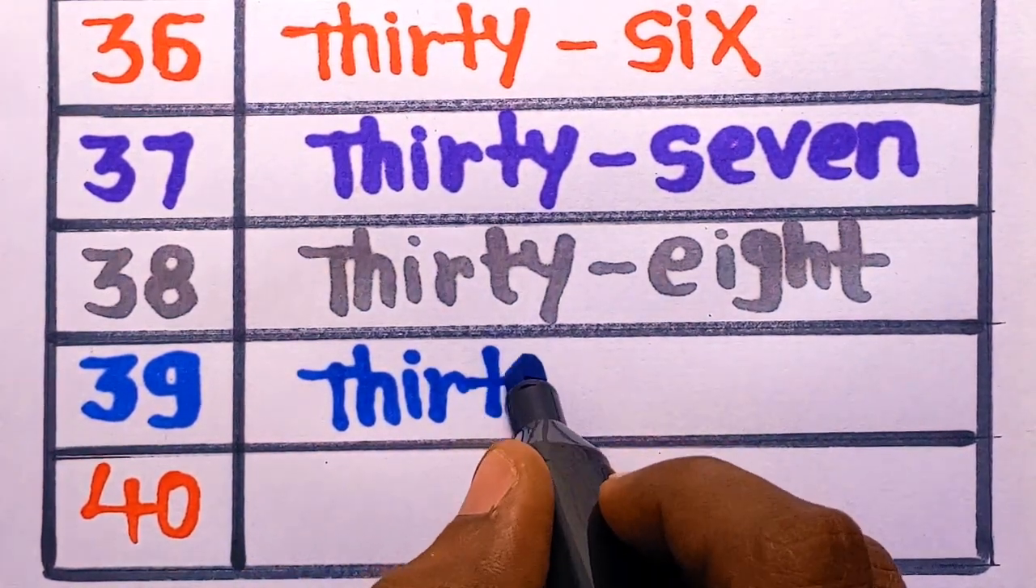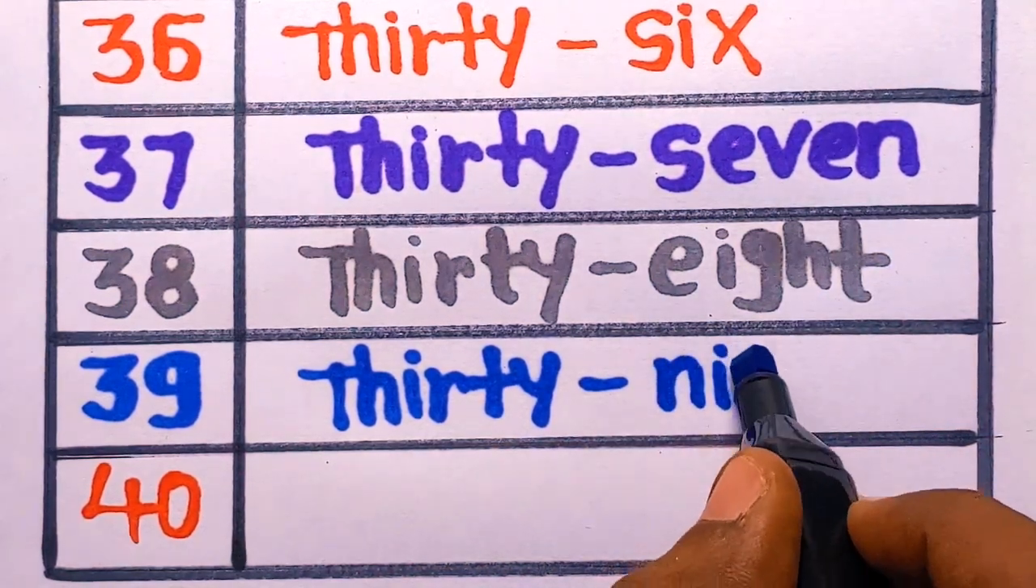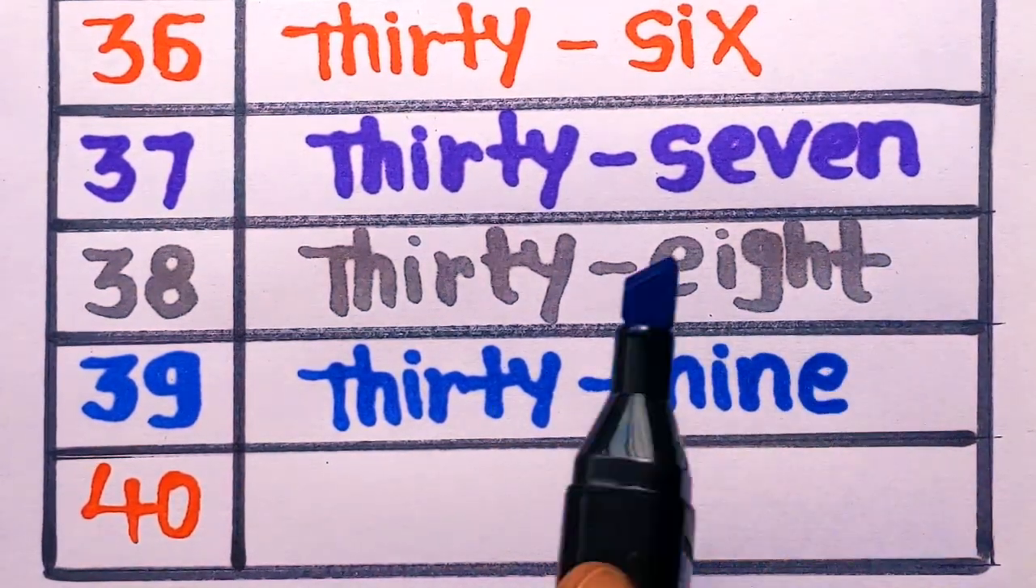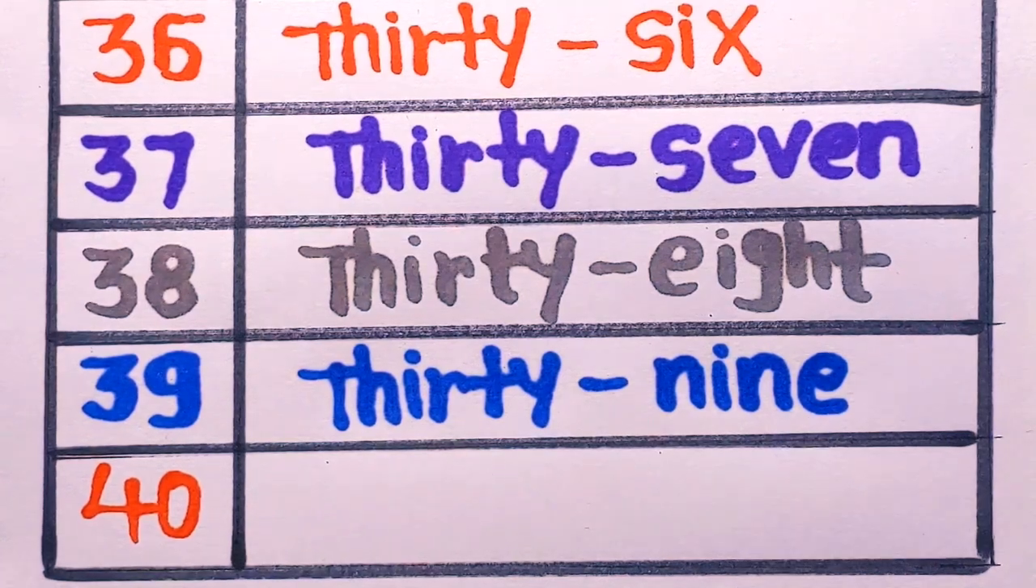Next is 39. T-H-I-R-T-Y, thirty. N-I-N-E, nine. 39, thirty-nine with a blue color.